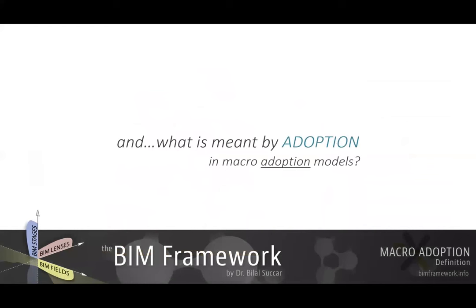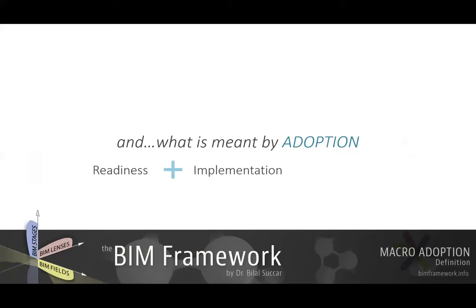What is meant by adoption in macro adoption models? When we say adoption, we are really referring to three different things. We are referring to readiness — readiness to adopt, readiness to implement — meaning a company or a market is ready to adopt BIM. This is the state before really implementing BIM. Adoption also refers to the first implementation: when a company buys the software, conducts the training, develops the system, and applies BIM on a project. We call this implementation.